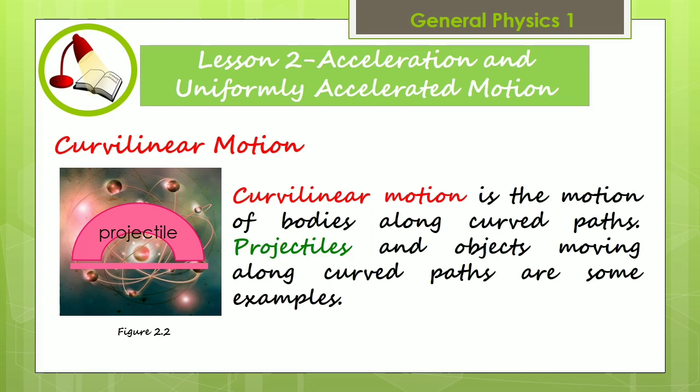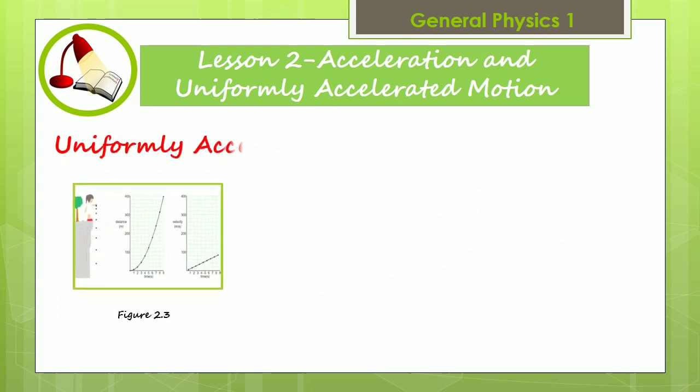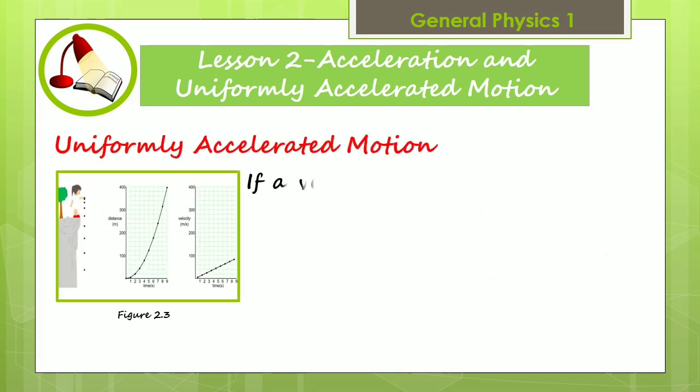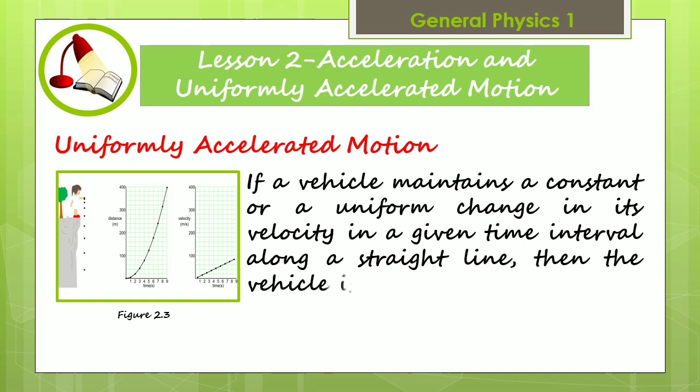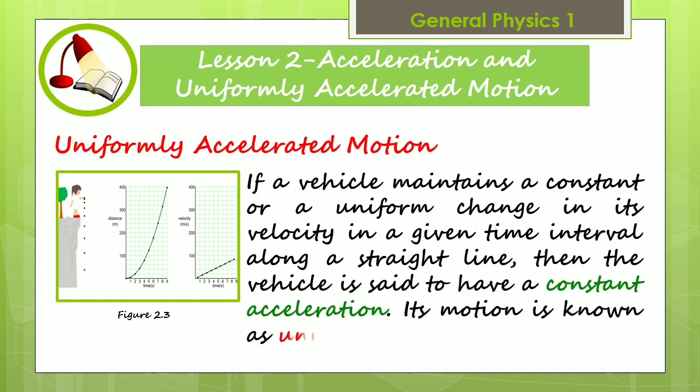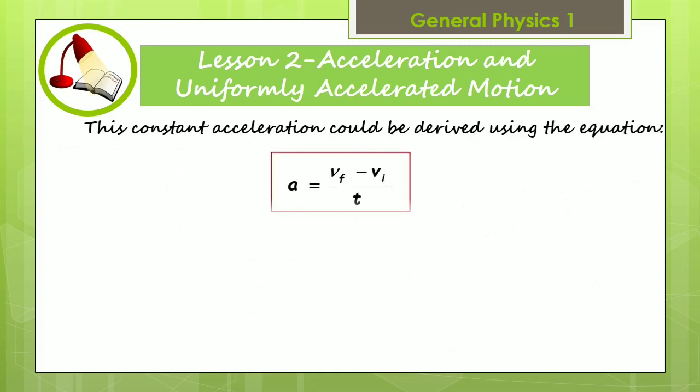If a vehicle maintains a constant or uniform change in its velocity in a given time interval along a straight line, then the vehicle is said to have a constant acceleration. Its motion is known as uniformly accelerated motion. This constant acceleration could be derived using the equation.